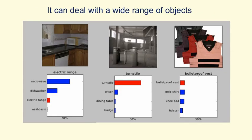It can, however, deal with a wide range of different objects. On the left, I would have said microwave as my first answer — the labels aren't very systematic, so the correct answer is actually electric range, but it does get it in its top five. In the middle, it's getting a turnstile, which is a distributed object, so it can do more than just recognize compact things. It can also deal with pictures as well as real scenes, like the bulletproof vest.